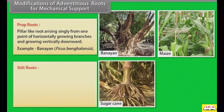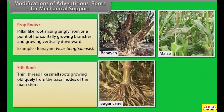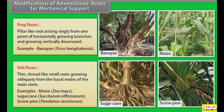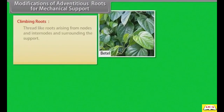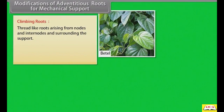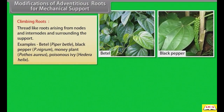Stilt roots are thin thread-like small roots growing obliquely from the basal nodes of the main stem. Examples: maize, sugarcane, screw pine. Climbing roots are thread-like roots arising from nodes and internodes and surrounding the support. Examples: betel, black pepper, money plant, poison ivy.